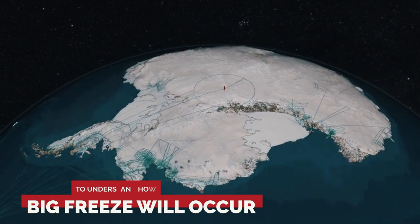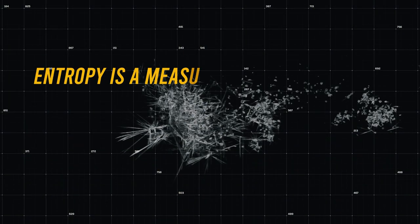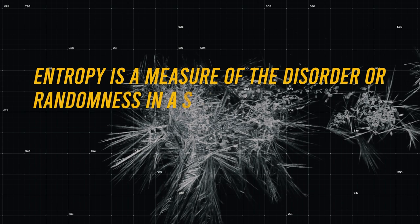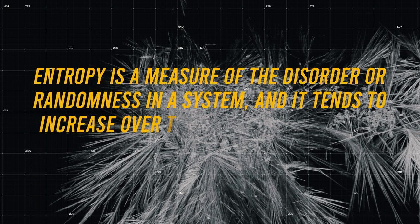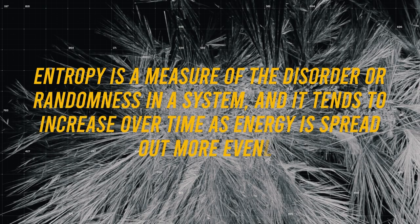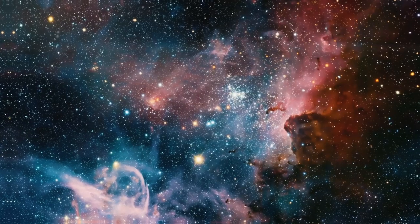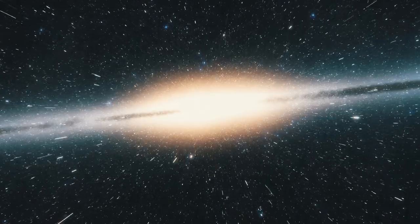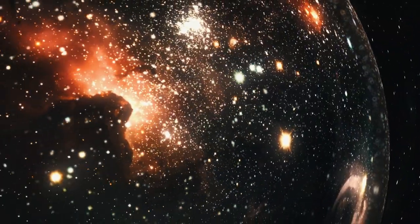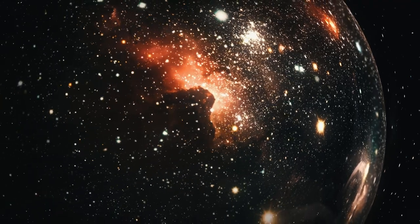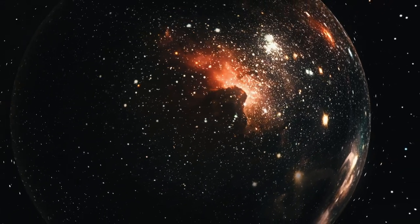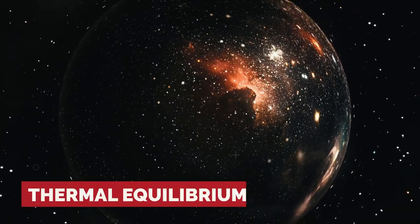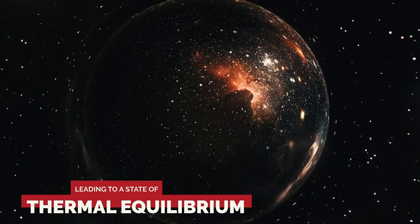To understand how the big freeze will occur, we need to explore the concept of entropy. Entropy is a measure of the disorder or randomness in a system, and it tends to increase over time as energy is spread out more evenly. In the case of the universe, the amount of energy is fixed, but as the universe expands, that energy is spread out over an ever-increasing volume of space.